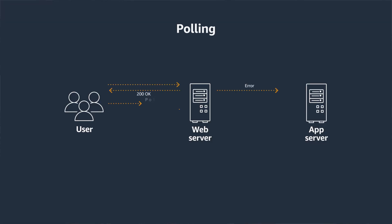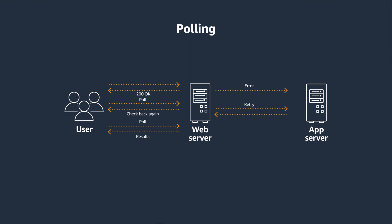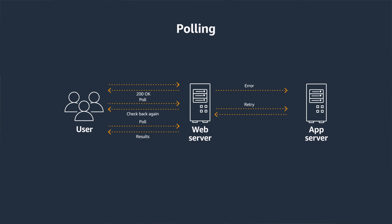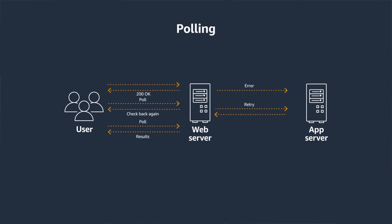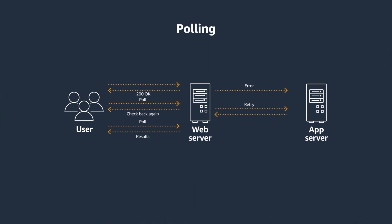One way I have seen these use cases being implemented is by using polling. You can implement regular polling where you send a request to the server, and instead of immediately waiting for a response, the client polls or reaches out to the server repeatedly in a defined time interval, checking for a response or a new message. Every call is a new HTTP request and can result in an empty response, so it's not very efficient.